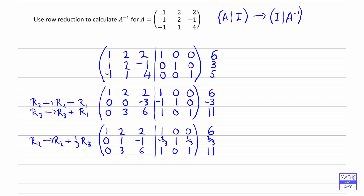So now we're ready to make the other elements in the second column 0. We want the 1 in the middle, but the 2 above and the 3 below, we want to become 0. So we need to operate on row 1: row 1 is going to be transformed by subtracting 2 lots of row 2. And row 3 is going to become, using that 1 in the second row, row 3 minus 3 times row 2.